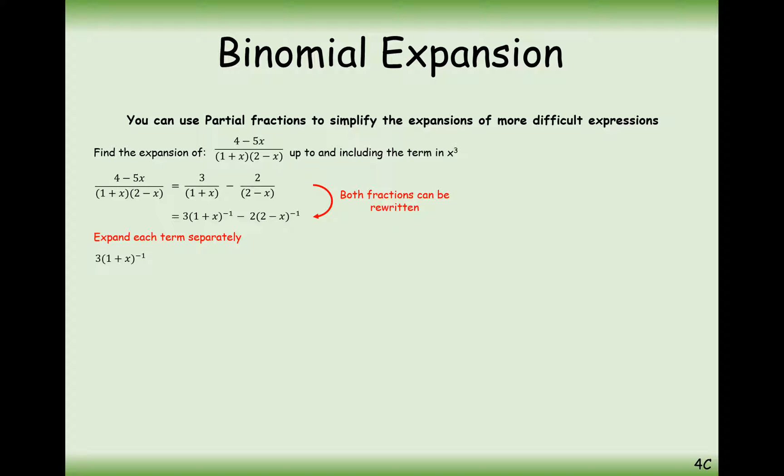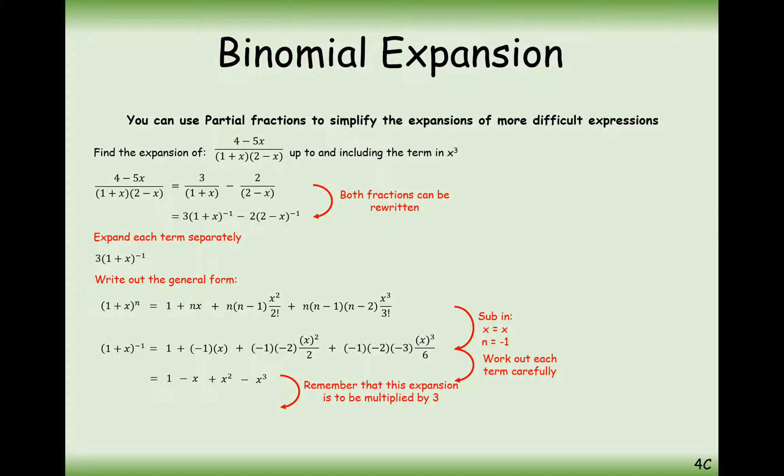Expand this one separately then. It's going to be written as 3 brackets 1 plus x to the minus 1. So once we've found that, we then need to multiply all of these terms by 3, because there is a 3 on the top of the fraction. So it's going to be 3 minus 3x plus 3x squared minus 3x cubed.